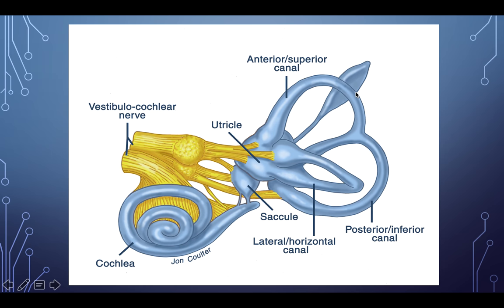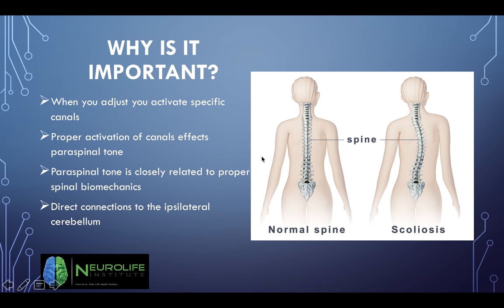The vestibular system is important because when you activate specific canals, proper activation can affect paraspinal tone, which is closely related to proper spinal biomechanics. There are also direct connections to the same-side cerebellum from the vestibular system. In clinical practice, changes in the spine are associated with changes in proprioceptive input, balance, and coordination — and patients with scoliosis will typically show some of these changes.